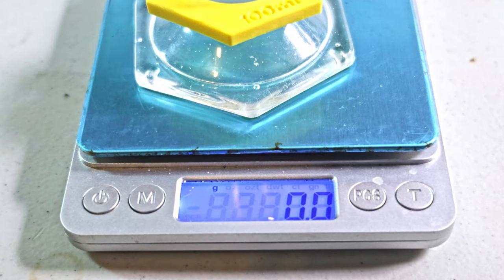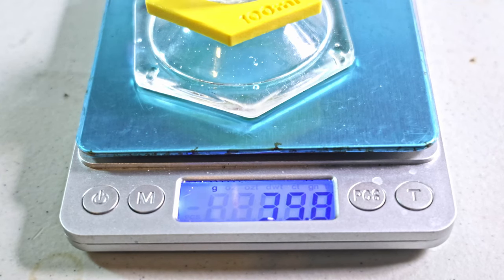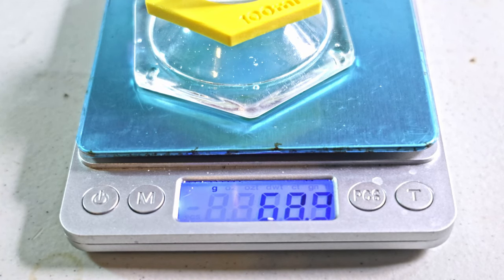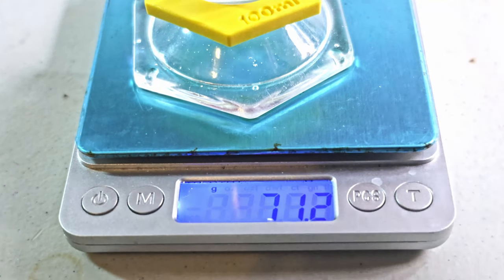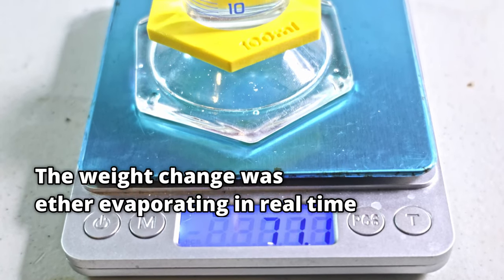To check the purity, I am going to weigh out 100ml of my ether. According to literature, the density of diethyl ether is 0.713g per milliliter. Our 71.2g means we have made pure ether.